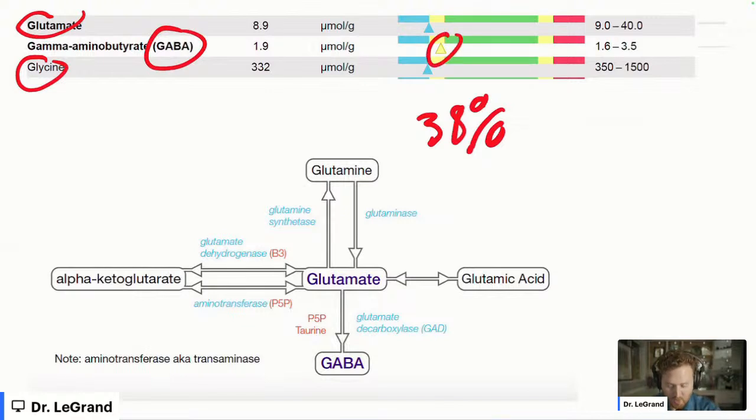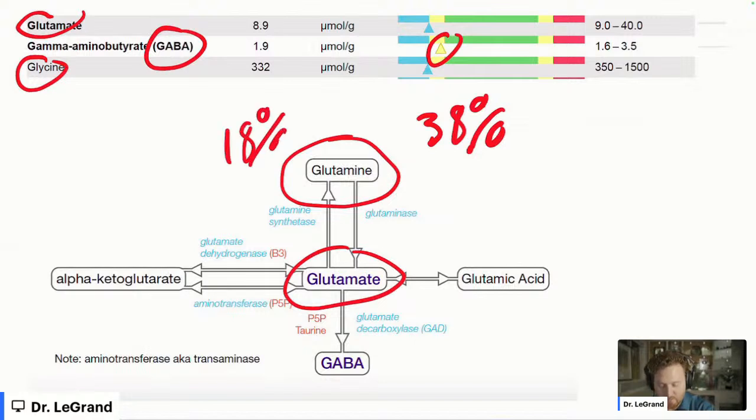Now, I want to kind of point out this graph, there's also a couple other key factors when it comes to making GABA. And that is glutamine. And so glutamine, there was an 18% reduction across the board. And then as far as glycine, which is another one that's really important for helping with the production, and that was glycine was 30%. So pretty significant.